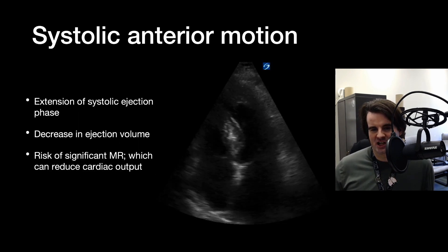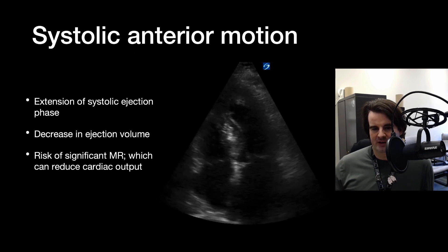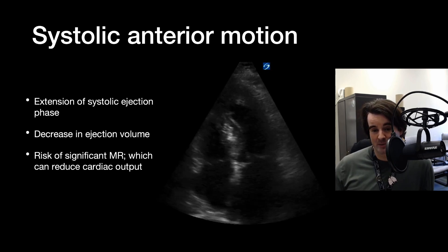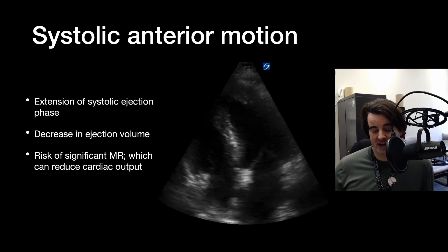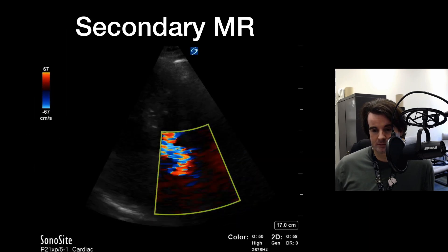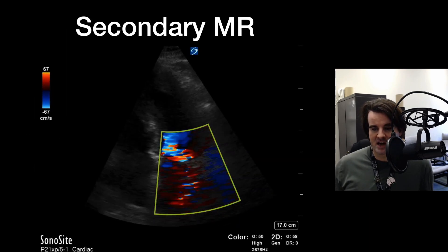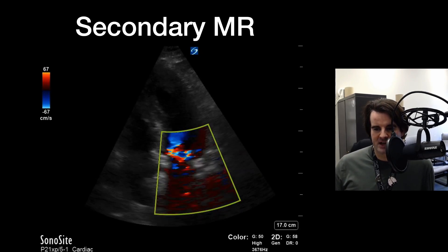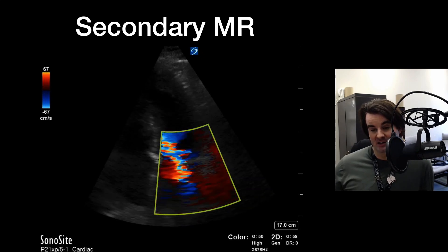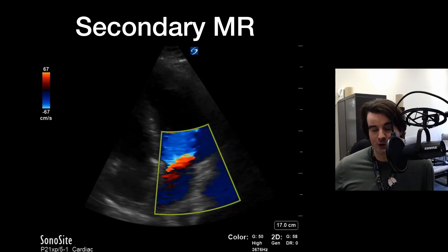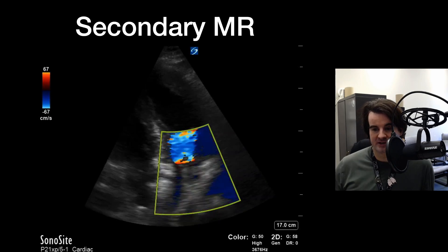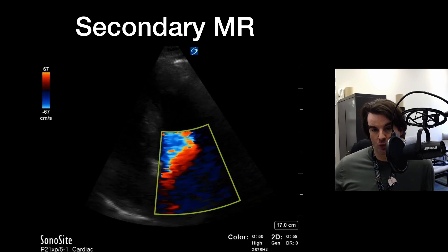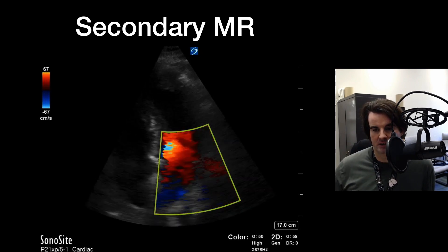The issue is this extension of the systolic ejection phase. There is a decrease in ejection volume, and also a risk of significant MR, which can even be severe, reducing cardiac output. The highly eccentric jet is directed posterior-laterally, and the actual jet signal itself may be relatively reduced by the Coanda effect — it's a wall-hugging jet, which can reduce some of the color signal volume seen in the left atrium.